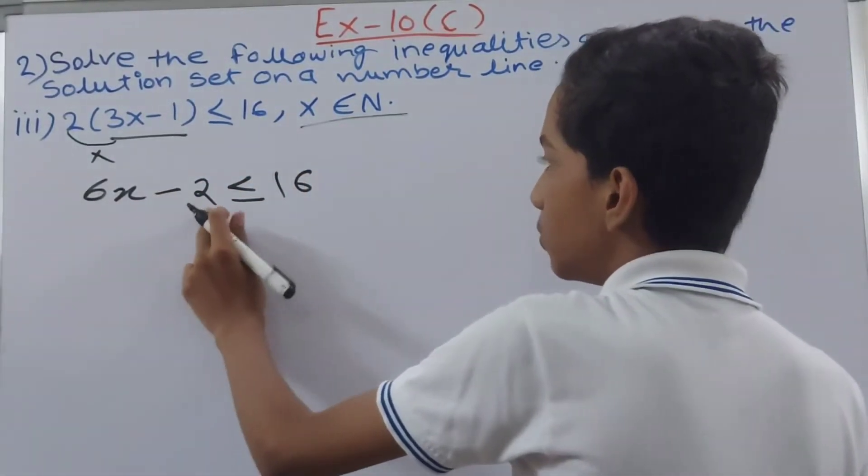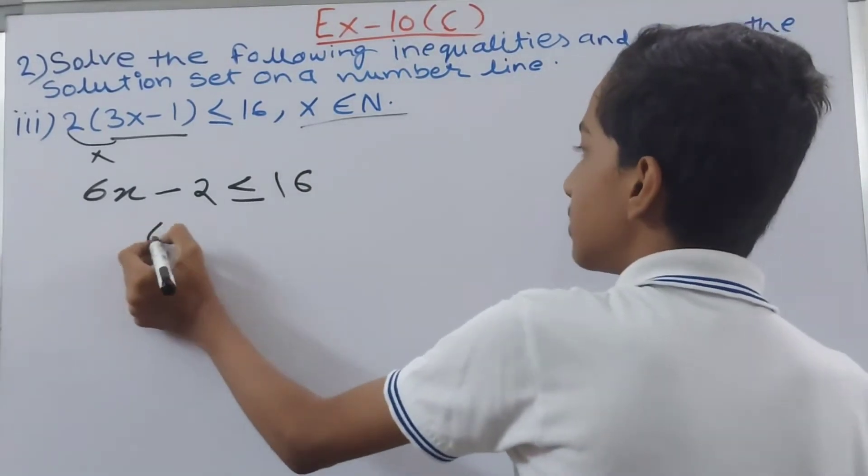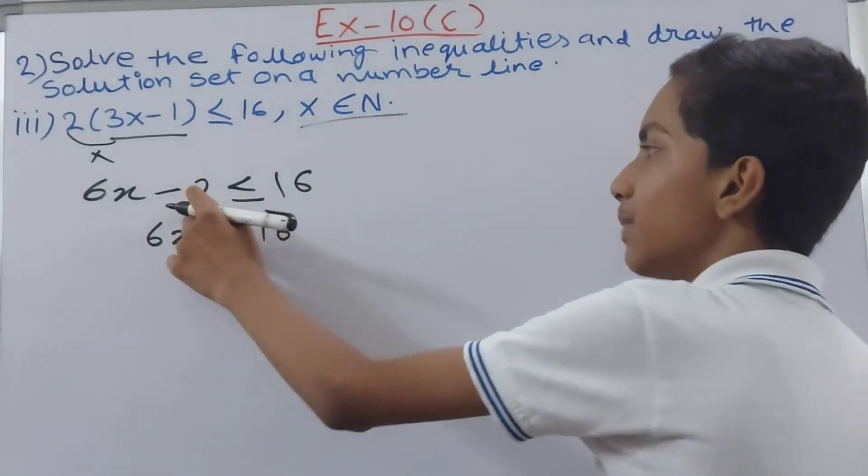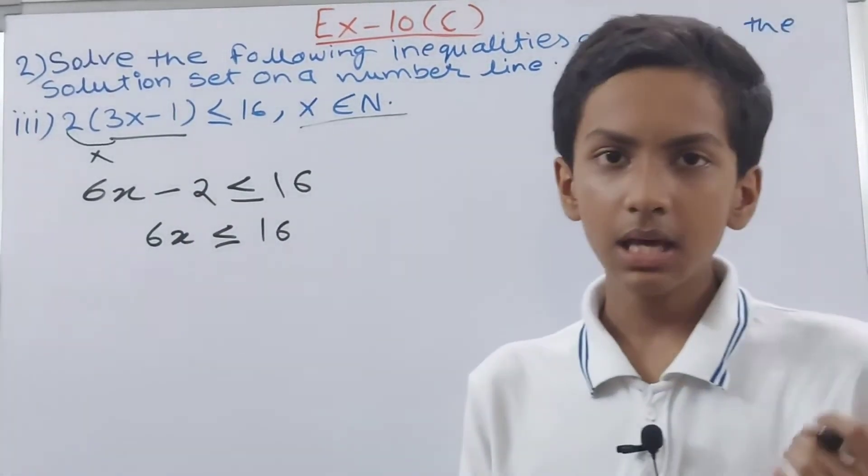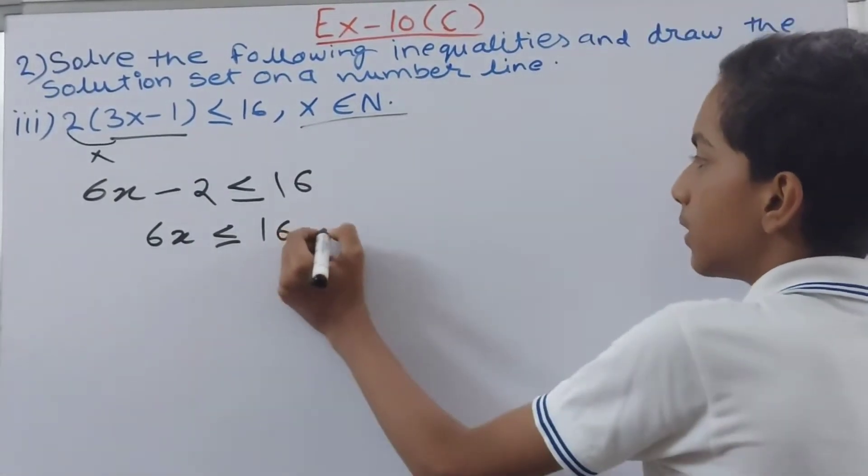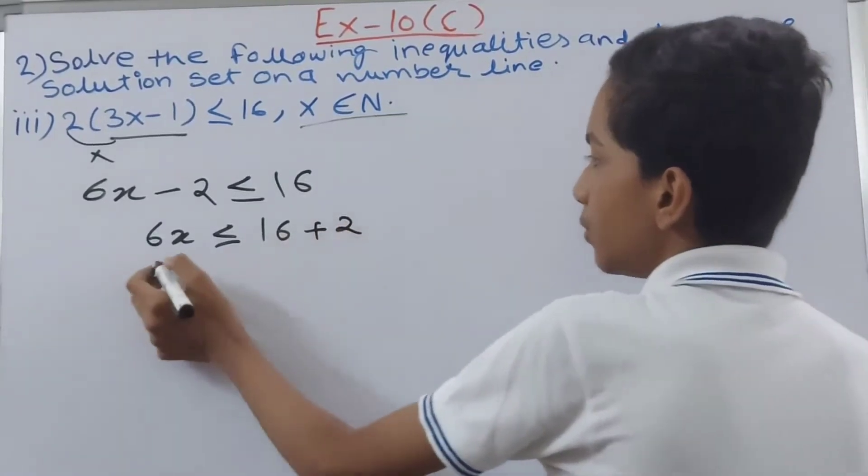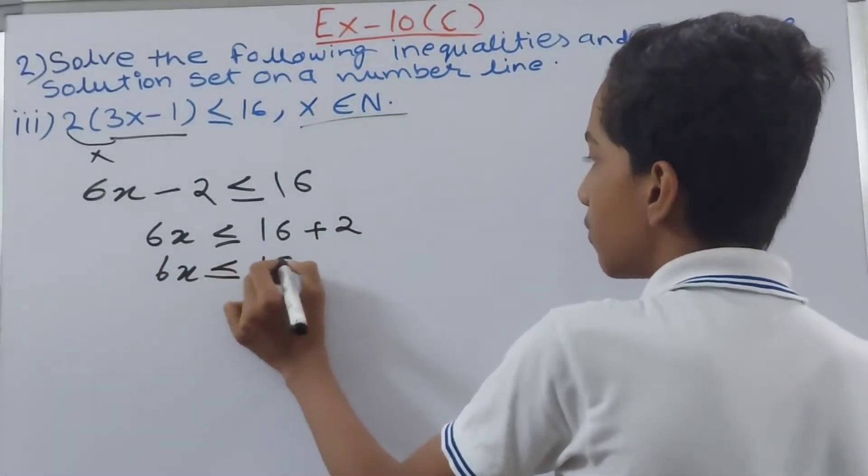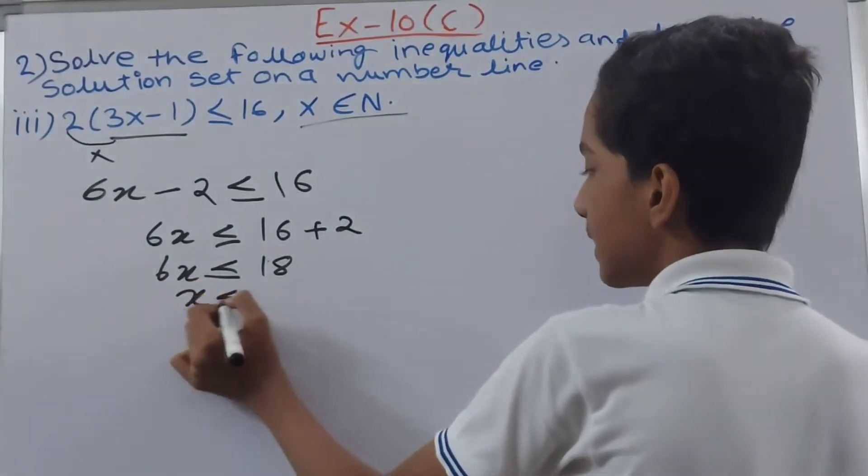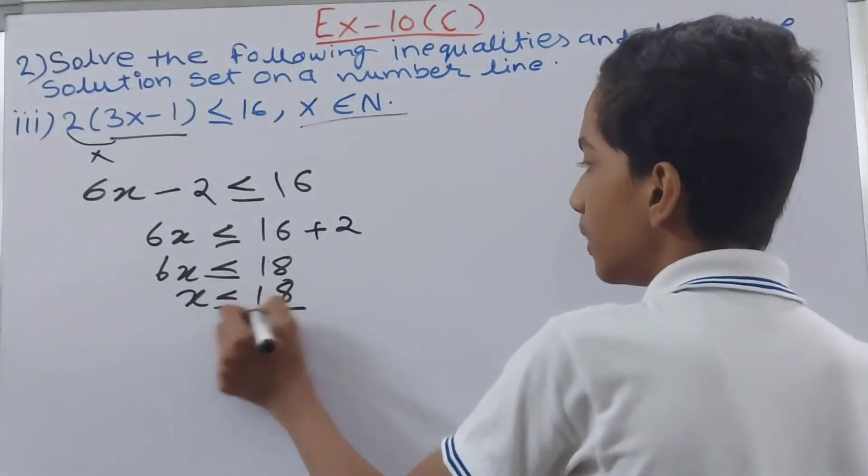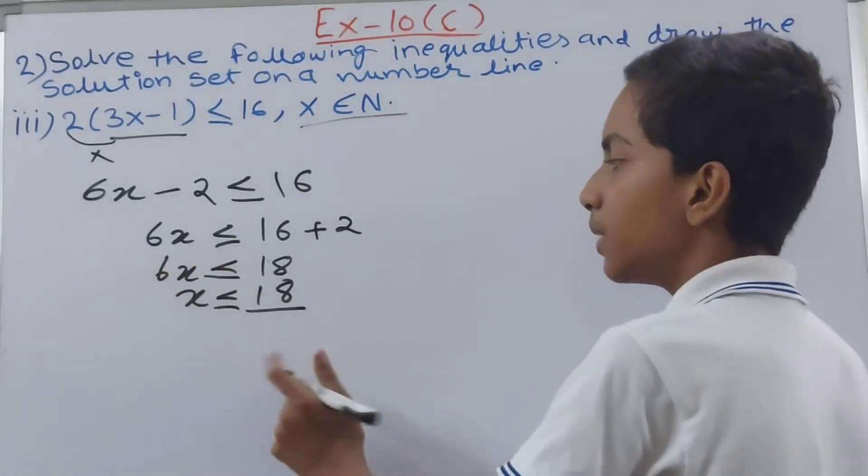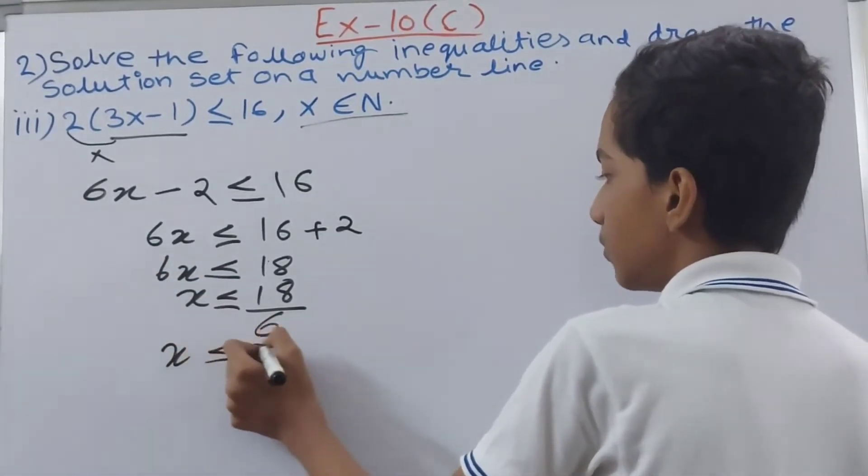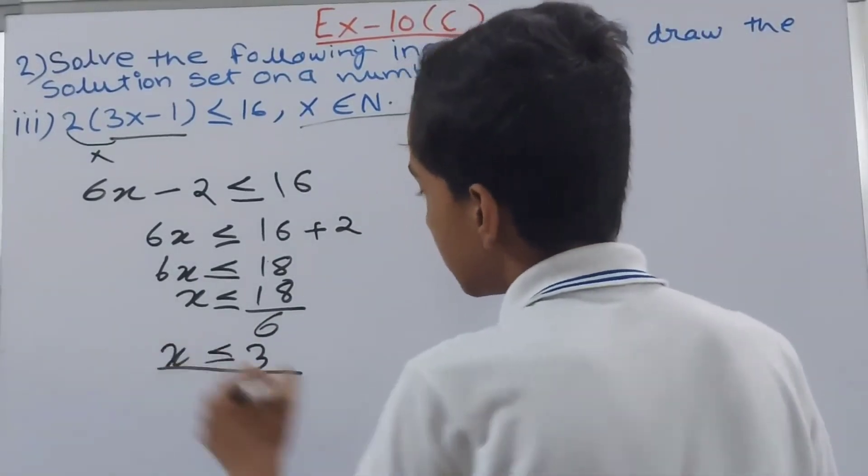This is less than or equal to 16 and this minus 2 gets taken to this side. So 6x is less than or equal to 16 plus 2. So you have 6x is less than or equal to 18, and x is less than or equal to 18 upon 6, because 6 here is multiplying so here it will divide. X is less than or equal to 3. This is the solution.